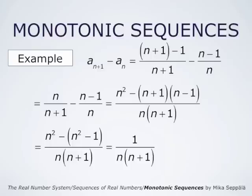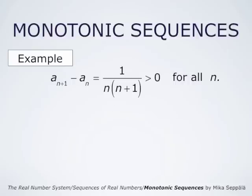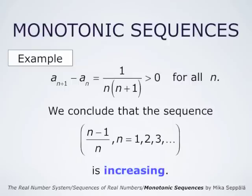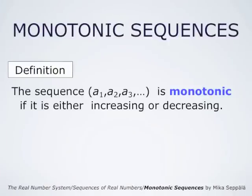We conclude that AN+1 minus AN is simply 1 divided by N times (N+1). Now N is a positive integer; therefore, AN+1 minus AN is always positive for all values of N. And this means that the sequence (N-1)/N, for N from 1, 2, 3 and so forth, is increasing. We say that a sequence A1, A2, A3 and so forth is monotonic if it is either increasing or decreasing.